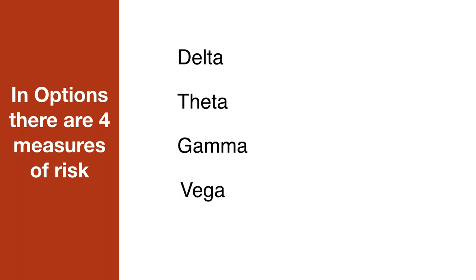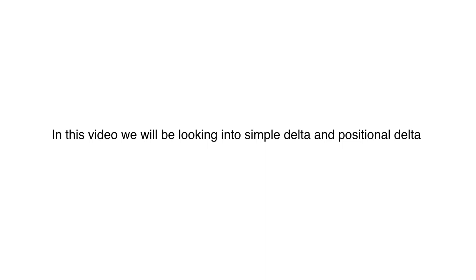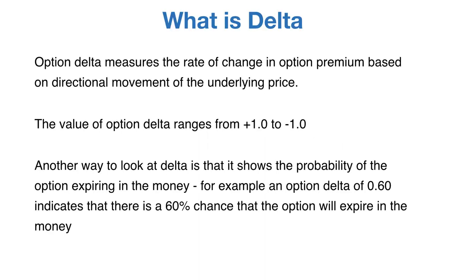Or how interest rate changes affect the pricing of the option. In options, there are 5 main types of Greeks: Delta, Theta, Gamma, Vega and Rho. But in this video, we are going to deal extensively with Delta only.